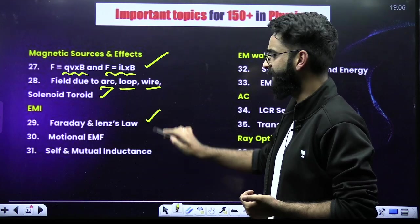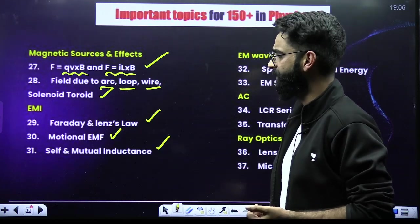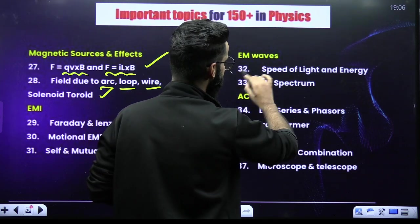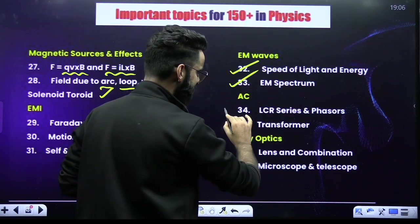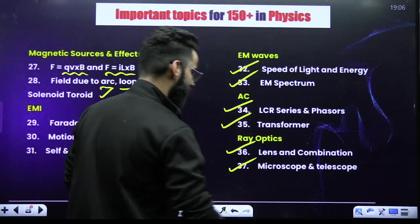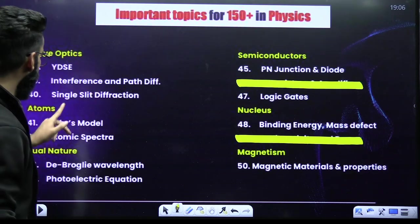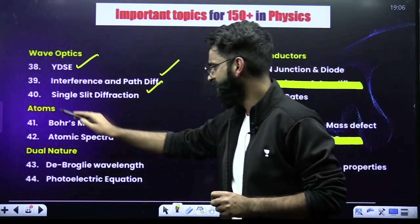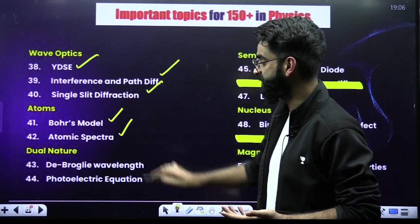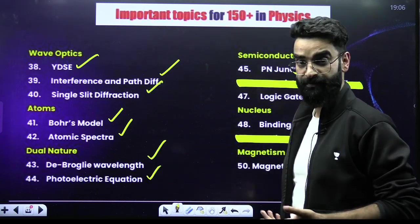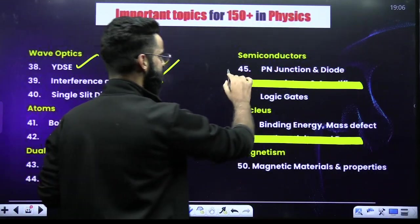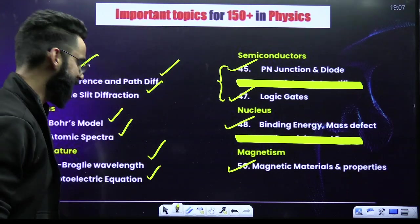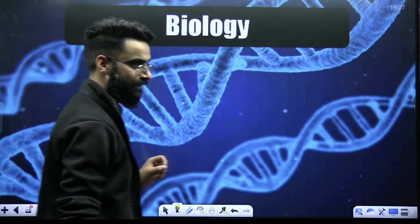For EMI: Faraday's laws and Lenz's law, motional EMF, self and mutual inductance. For Electromagnetic Waves: speed of light and energy, electromagnetic spectrum. For AC: LCR circuit phases and transformer. For Ray Optics: lens combination, microscope and telescope. For Wave Optics: YDSE, interference path difference, single slit diffraction. For Atoms: Bohr's model and atomic spectra. For Dual Nature: De Broglie's hypothesis and photoelectric effect. Semiconductors: PN junction and diode, logic gates. For Nucleus: binding energy and mass defect. For Magnetism: magnetic materials and properties.